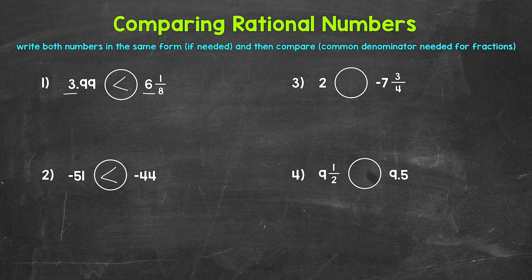Moving on to number three, we have two versus negative seven and three-fourths. Here we have a positive and a negative. A positive is always going to be greater than a negative. So two is greater than negative seven and three-fourths. A positive is always going to be greater than a negative, so there isn't much to this one.